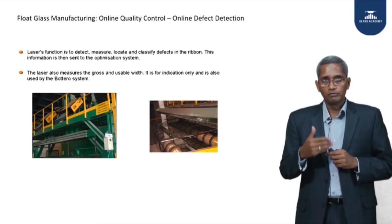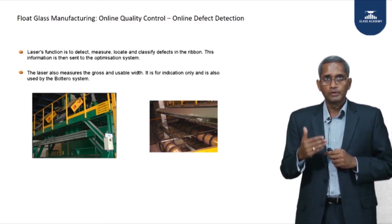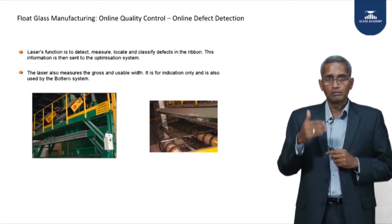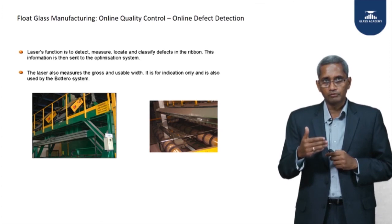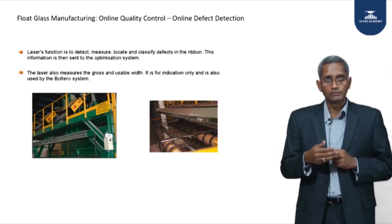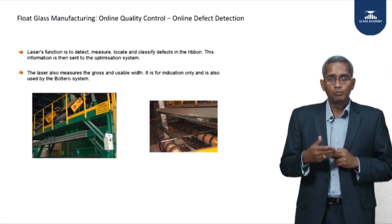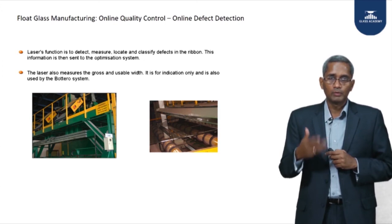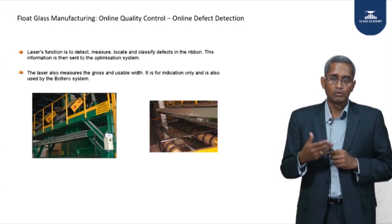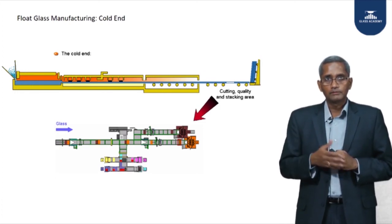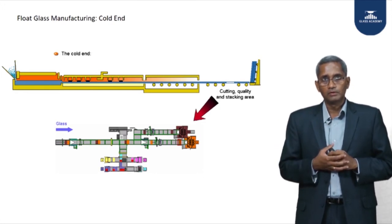All float lines are equipped with high-tech detection devices that can spot defects — unmelted raw materials or bubbles from poor refining where CO2 has not escaped the glass efficiently. Even defects invisible to the naked eye under good lighting are identified by scanners, and defective glass is scrapped online.